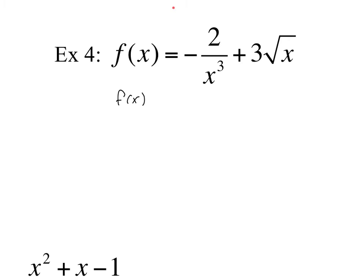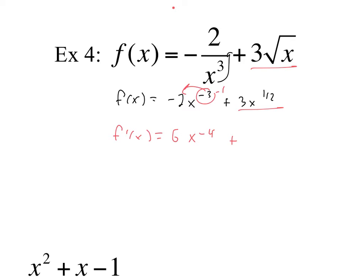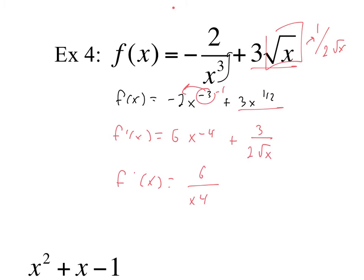For f of x equals negative 2 over x cubed plus 3 square roots of x, we rewrite as negative 2x to the negative 3 plus 3x to the 1 half. Using the power rule: negative 2 times negative 3 is positive 6, x to the negative 4. For the square root term, using our memorized result, that gives 3 over 2 square roots of x. So f prime of x equals 6 over x to the 4th plus 3 over 2 square roots of x.